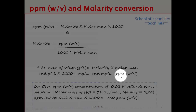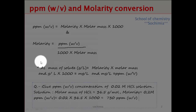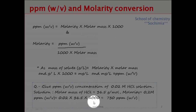As a solved example, the ppm concentration is to be calculated. Molarity of HCl is given as 0.02 molar and molecular mass of HCl is 36.5 grams per mole. Applying this formula — molarity multiplied by molar mass multiplied by 1000 — gives us 730 parts per million weight by volume.